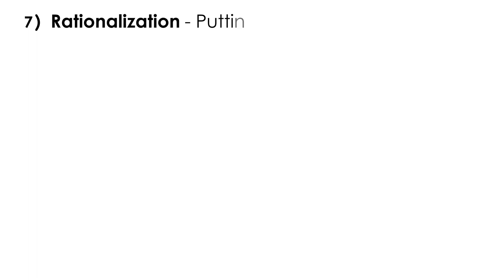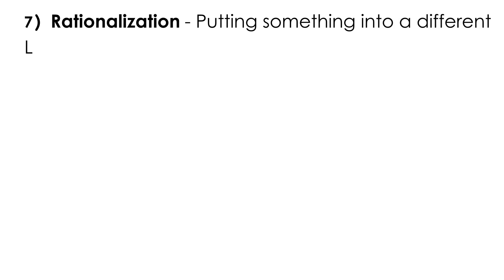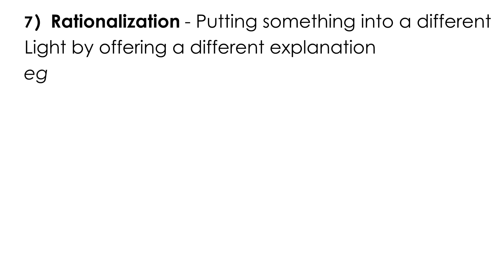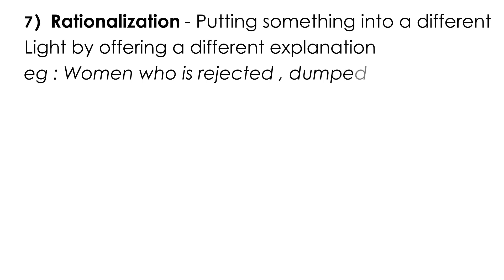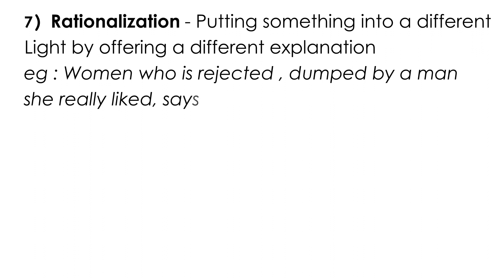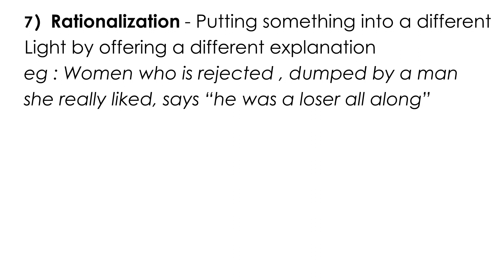The next one is rationalization — when someone puts a situation in a different light by offering a different explanation. A perfect example: a woman is rejected by a man she really liked, and she reacts by saying, 'Well, he was a loser all along.' She's trying to put the situation in a different light by offering an alternative explanation. That defense mechanism is rationalization.